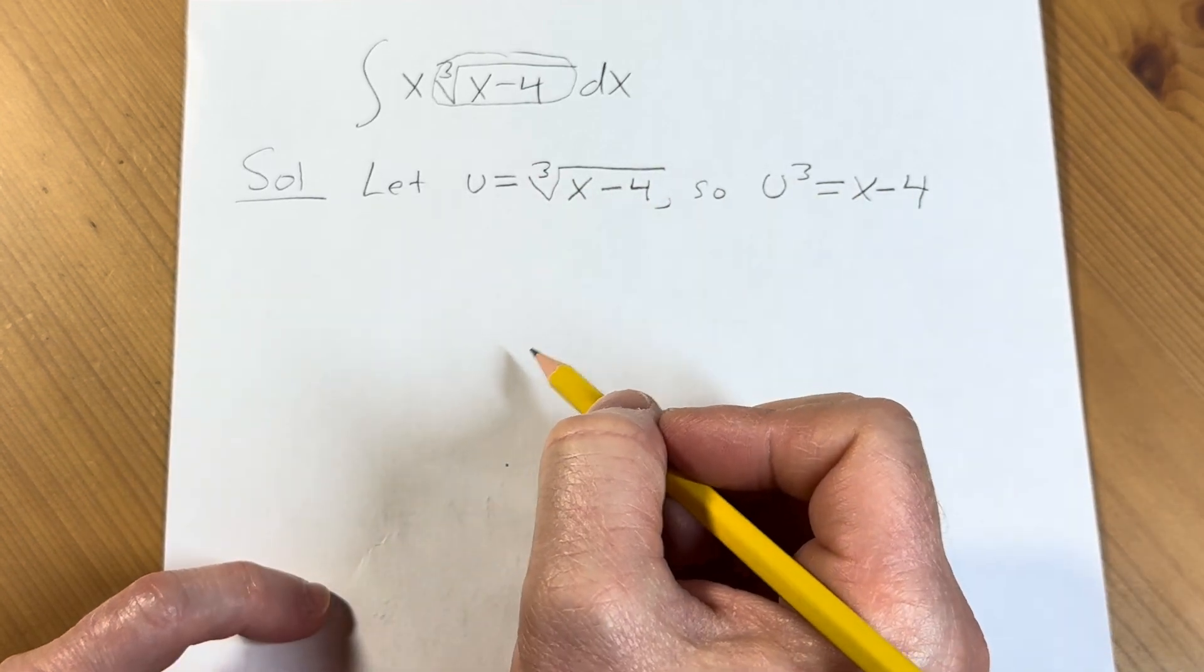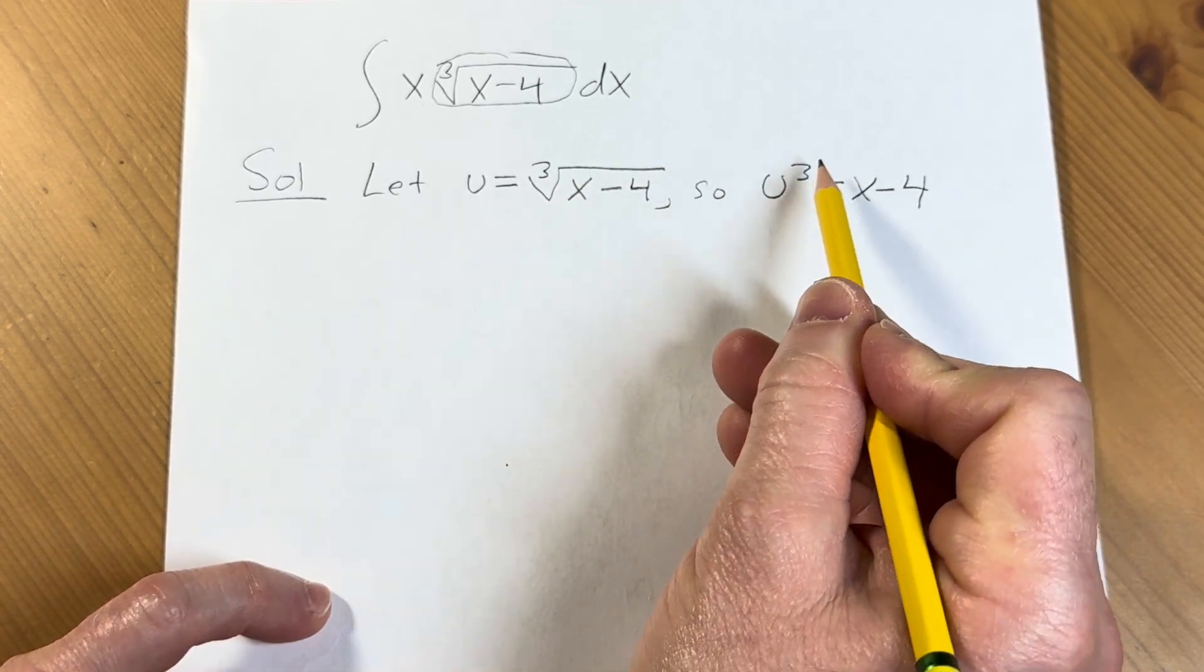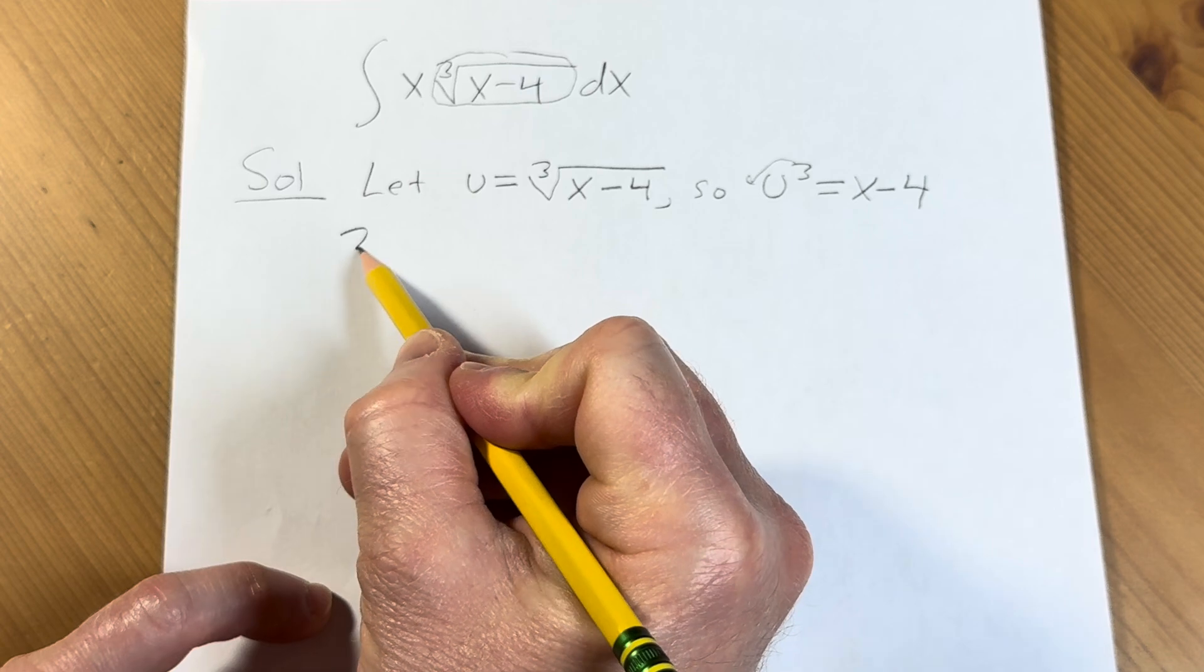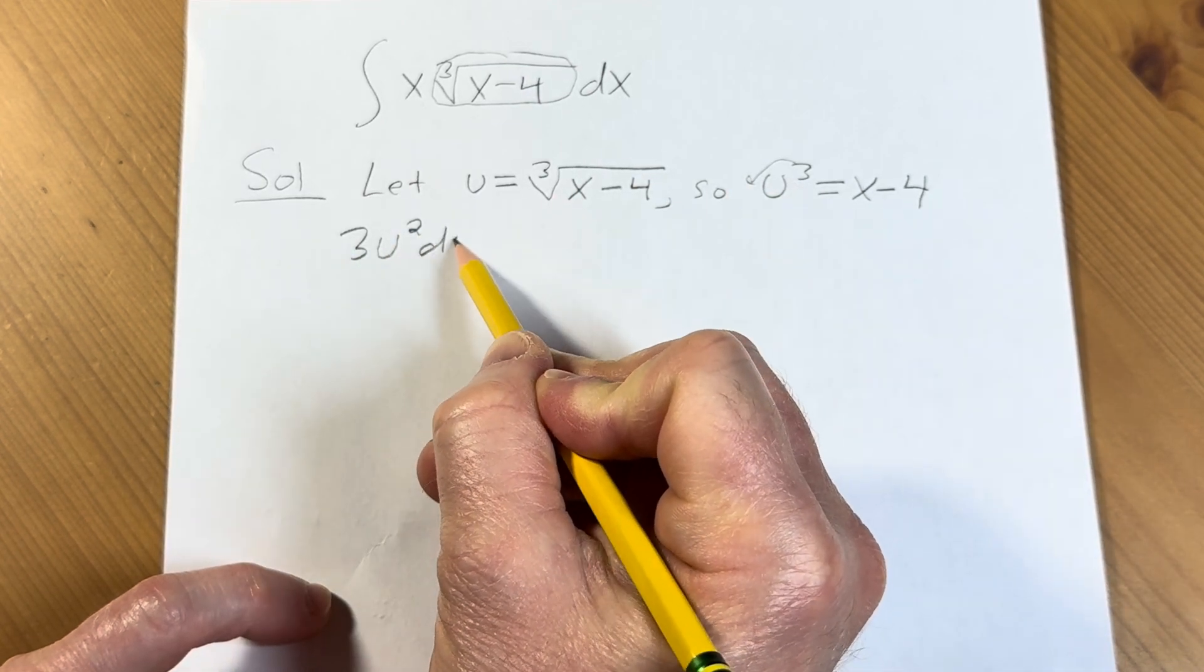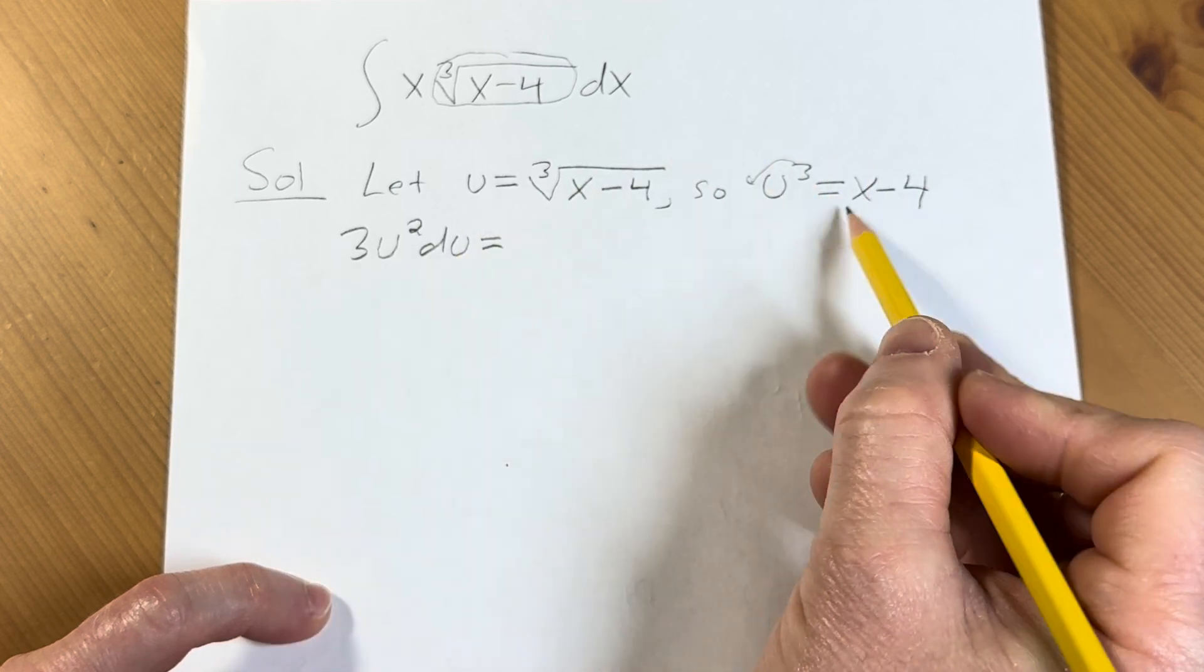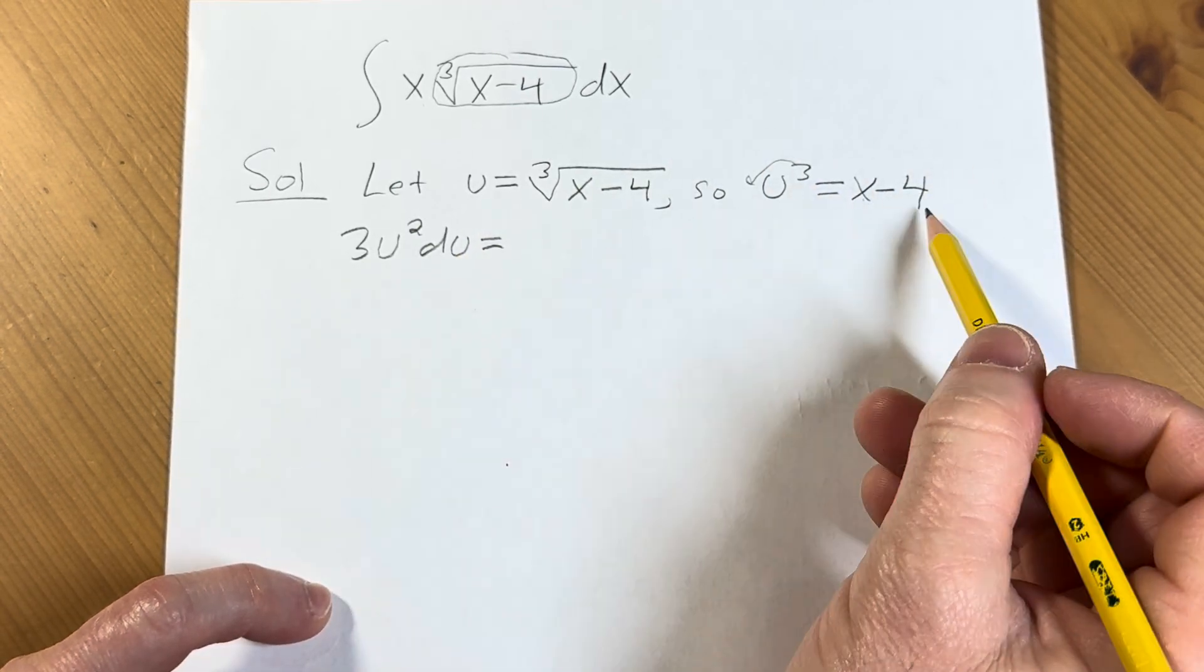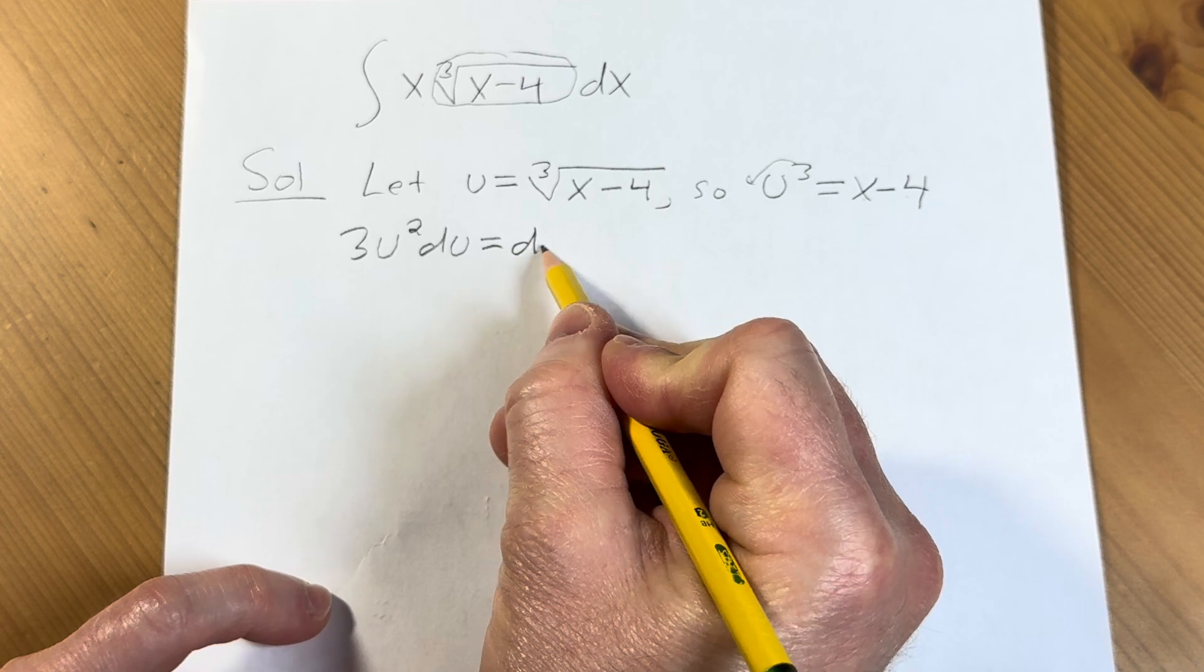Now we differentiate both sides using differential notation. Here we'll bring down the 3, so this is 3u squared subtracting 1 from the exponent. And then du is equal to, well, the derivative of x is 1 and the derivative of negative 4 is 0. This is simply dx.